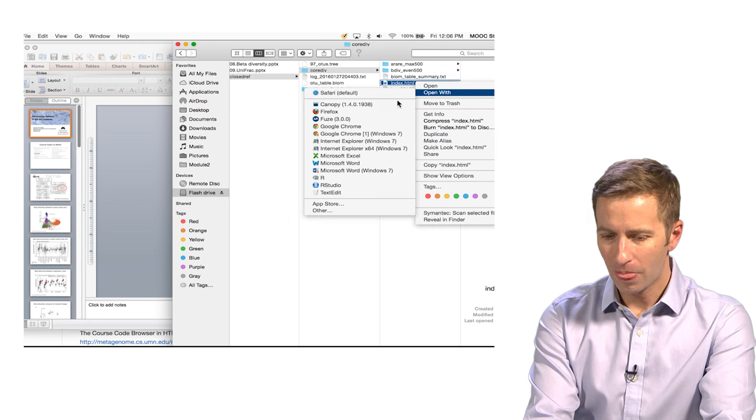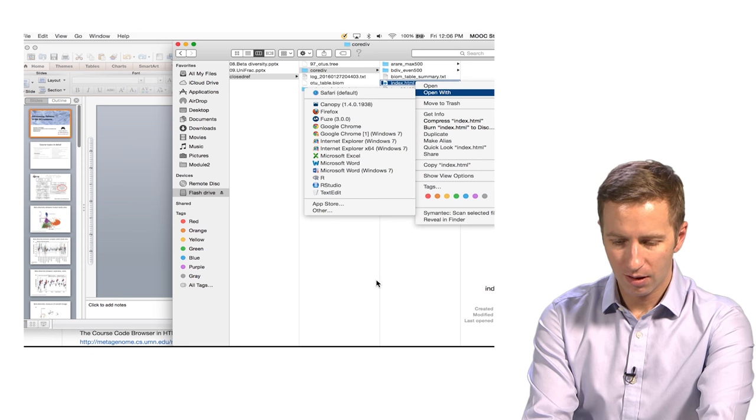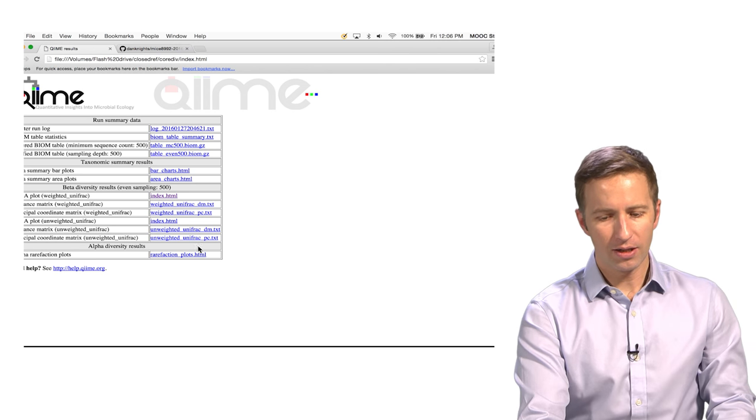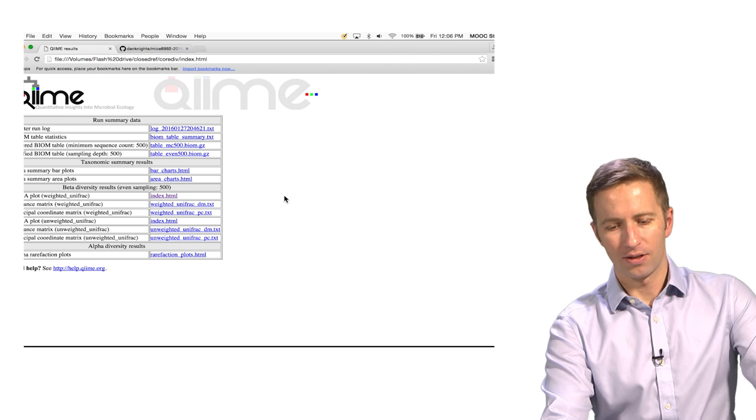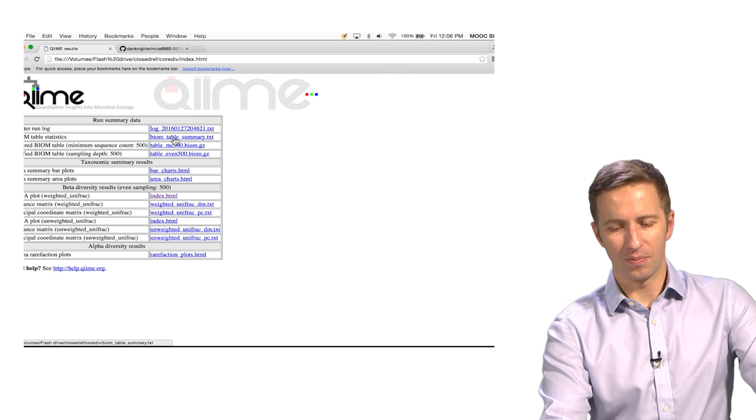So you want to open that in your favorite web browser. I have it open already in Chrome. And you get this nice little summary output from QIIME that gives you information about the biome table.